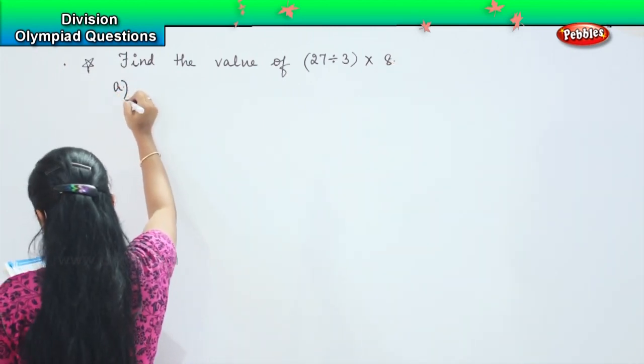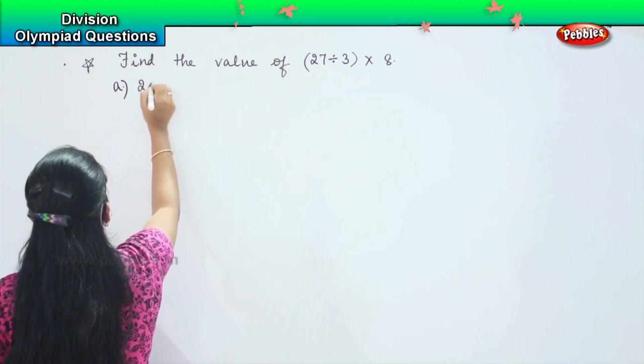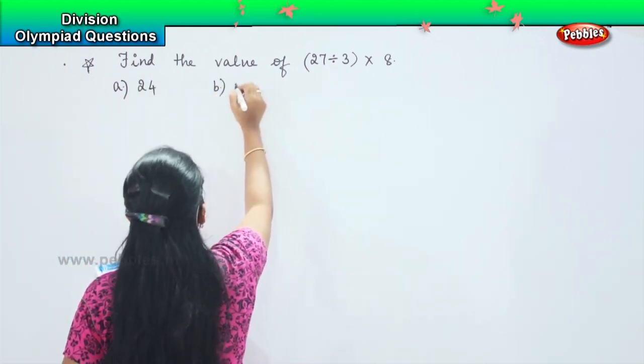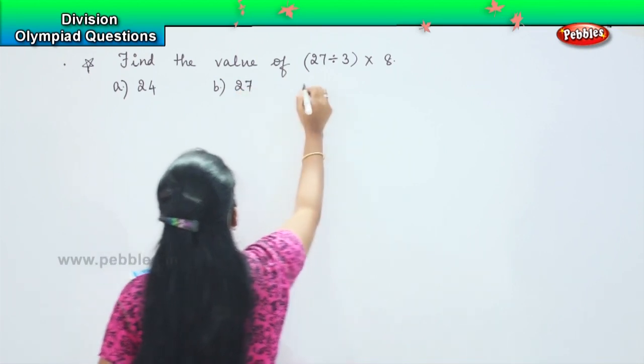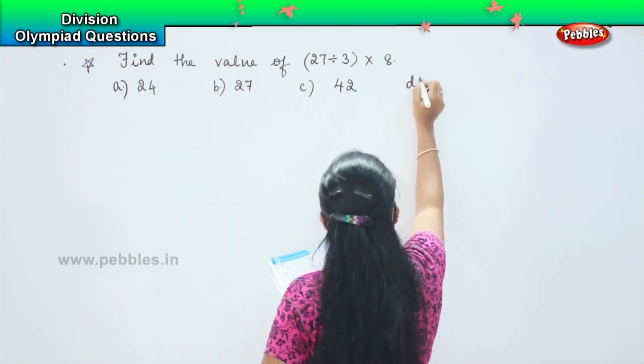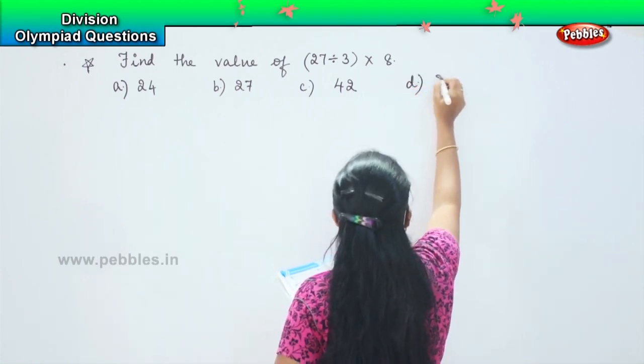And your options are A 24, B 27, C 42 and D 72.